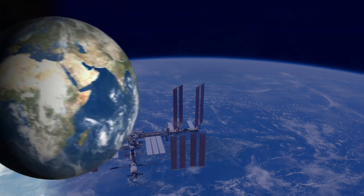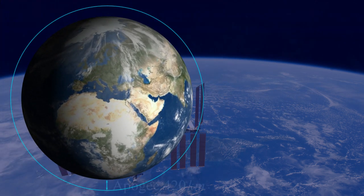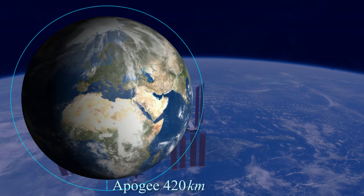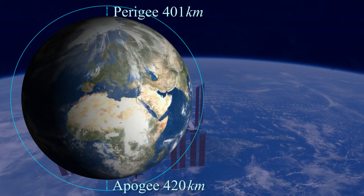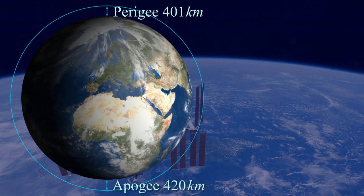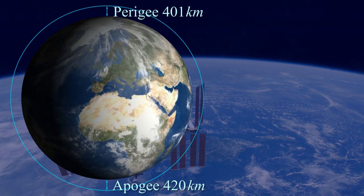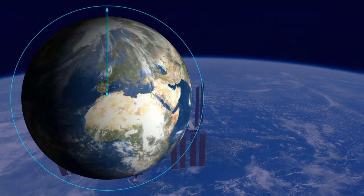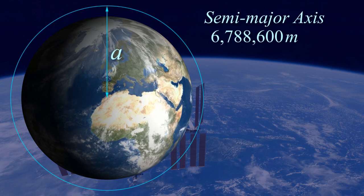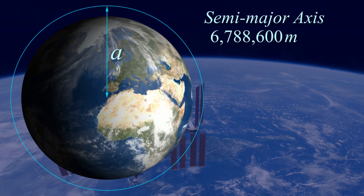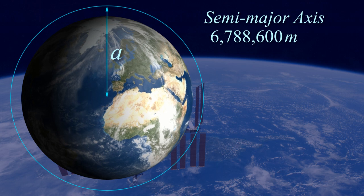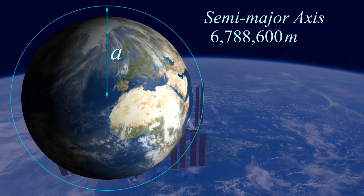On the 25th of January 2013, its orbit had an apogee altitude of 420 km, and a perigee of 401 km. Its orbit is very nearly circular. Adding these values to Earth's equatorial diameter and halving gives us the semi-major axis for the orbit of 6,788,600 metres.